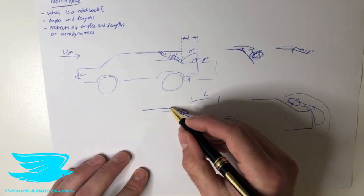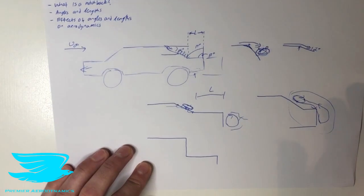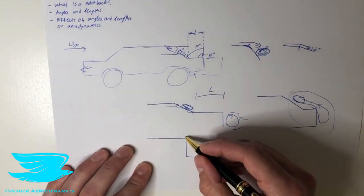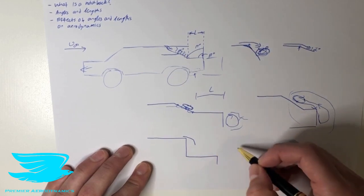Alternatively, if we have an angle here and we make it very sharp, so it's actually like a step now, what we have is the flow will separate and we'll just get a lot of flow separation here.